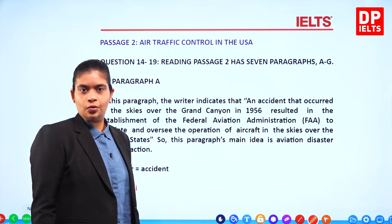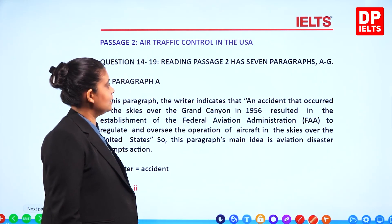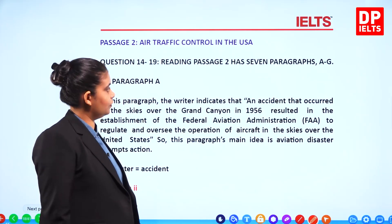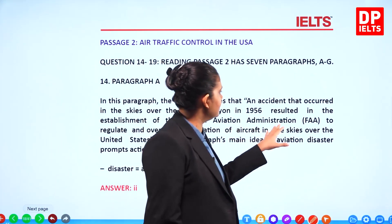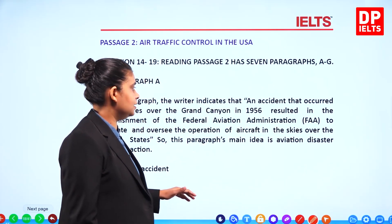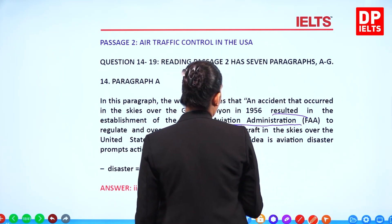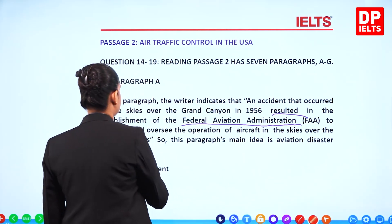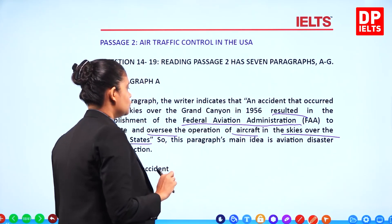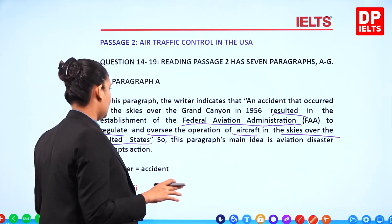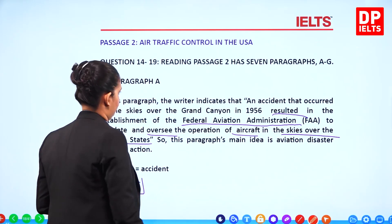Passage 2: 'Air Traffic Control in the USA'. An accident that occurred in the skies over the Grand Canyon in 1956 resulted in the establishment of the Federal Aviation Administration, the FAA, to regulate and oversee the operation of aircraft in US skies. This paragraph's main idea is that an aviation disaster prompted action. So I would say the answer is number 2.